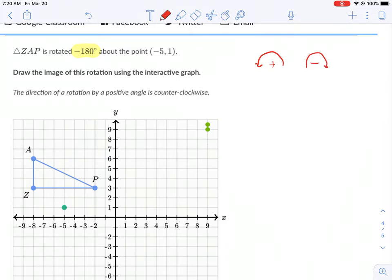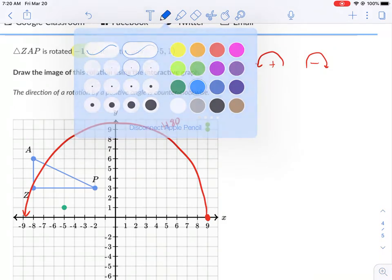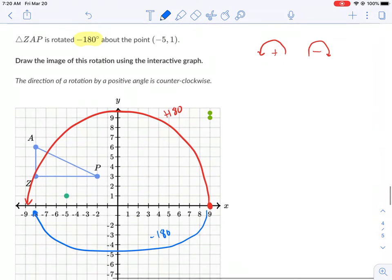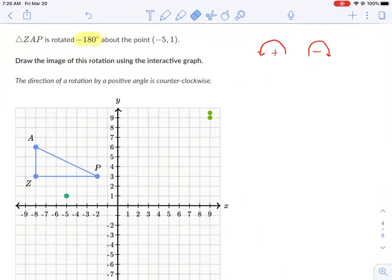However, if we're talking about 180 degrees, say we started over here on nine comma zero, and we rotate 180 degrees around the origin, we would get here, that's positive 180. What would happen if we did a negative 180? Negative 180 would take us to the same exact place. So if it says negative 180, just consider it 180. It doesn't matter if it's positive or negative, you get to the same location.